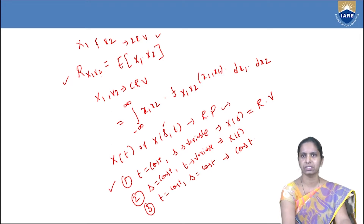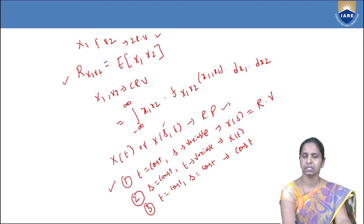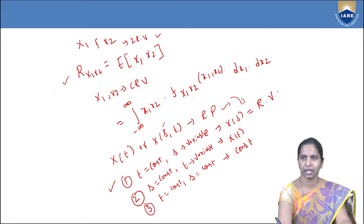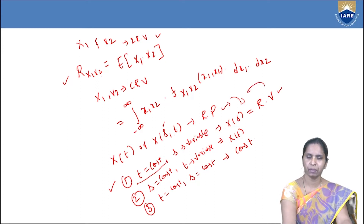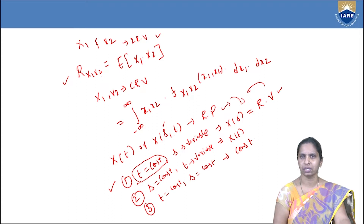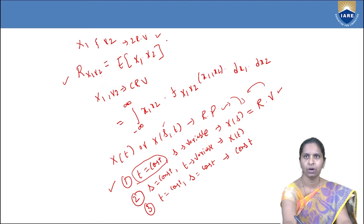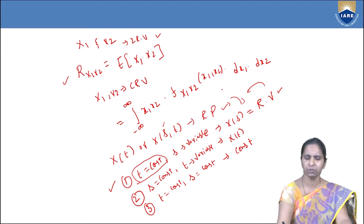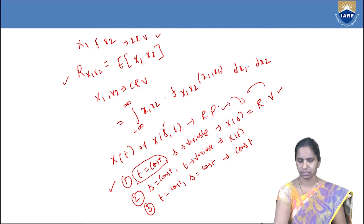When the time is constant in the random process, then the random process is a function of only the sample space elements — it is not varying with respect to t, so it becomes a random variable. So we can relate random variables and the random process by keeping the time as constant. Now we are applying the same concept of correlation between two random variables to the random process.